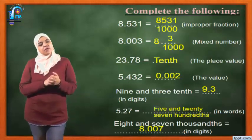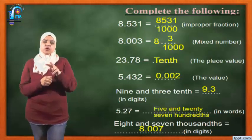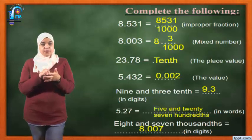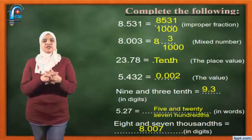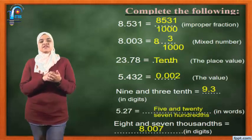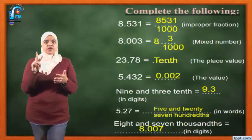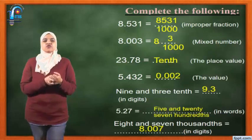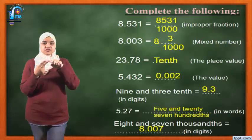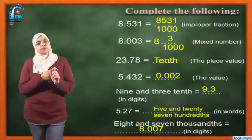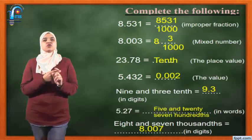5.27 — I want to write it in words. I cross the decimal point and put 'and' instead. So 5 and 27. After the decimal point there are two numbers. So how to read it? 27 hundredths. Why hundredths? Because there are two digits after the decimal point. The answer will be 5 and 27 hundredths.